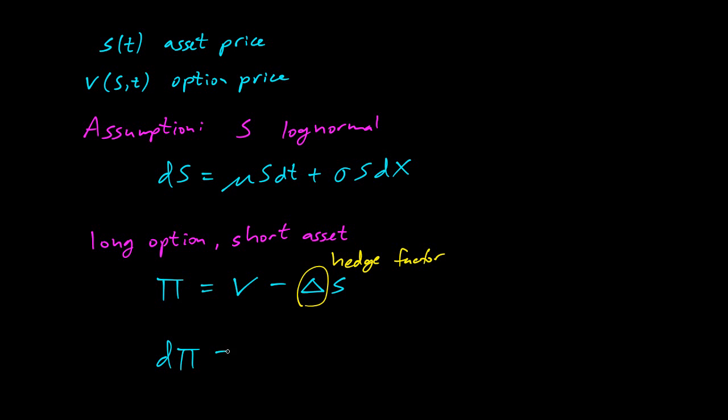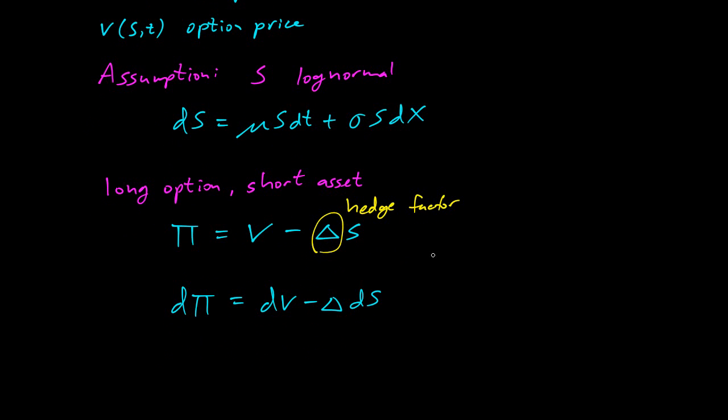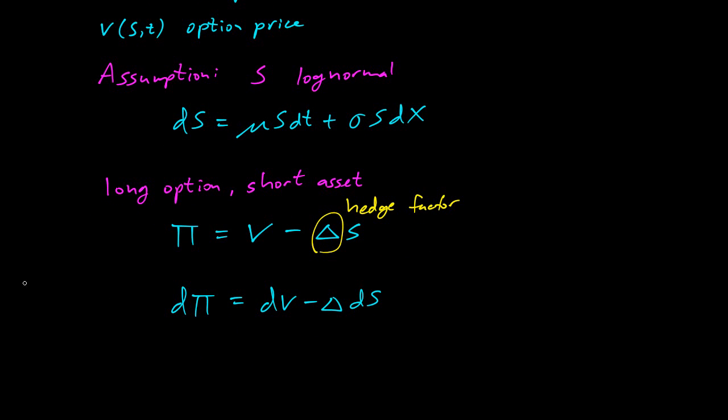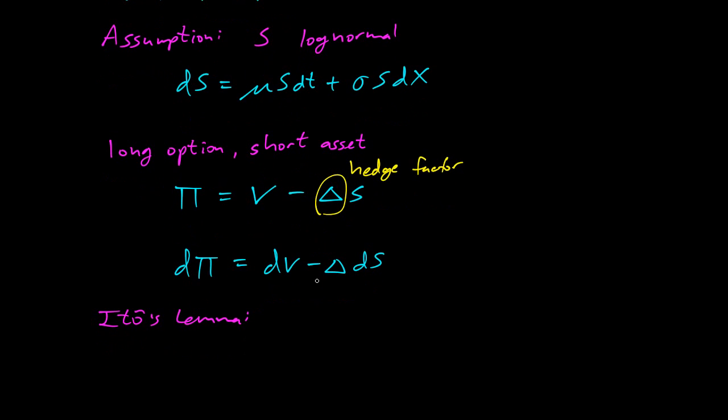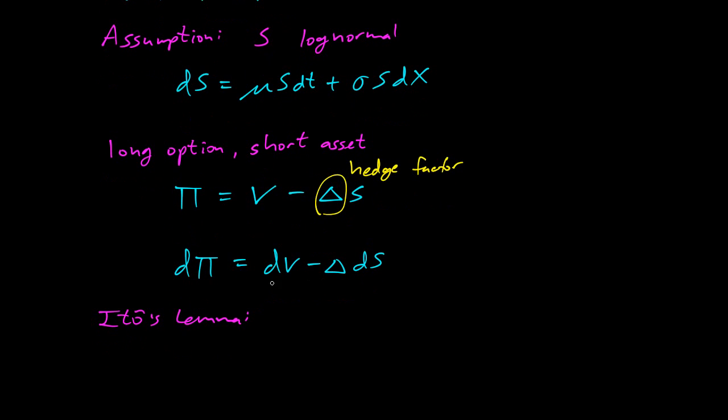So let's take a derivative here. The change in the value of our portfolio is just going to be dV minus Δ dS, just taking a derivative. And now what's dV? We can use Itô's lemma. We have to use the multidimensional Itô's lemma that we did last time. So how do you do that? It's the first derivative parts: the derivative with respect to S, dS; derivative with respect to t, dt.